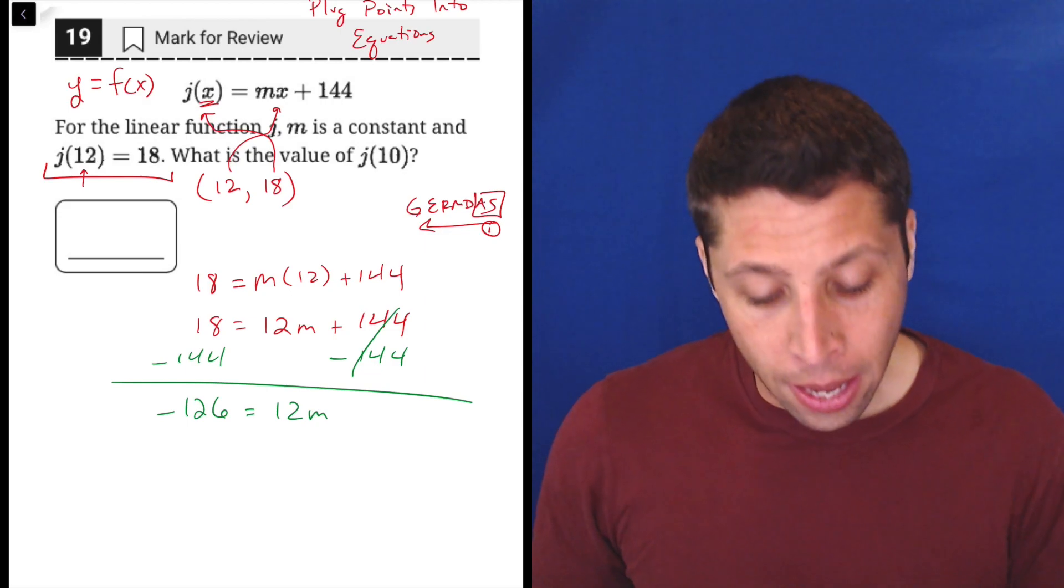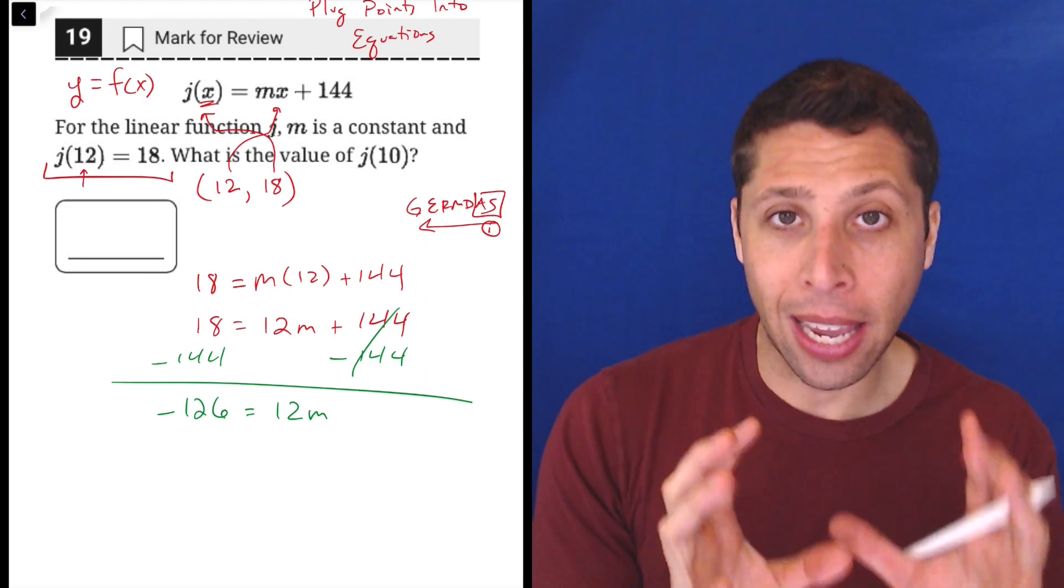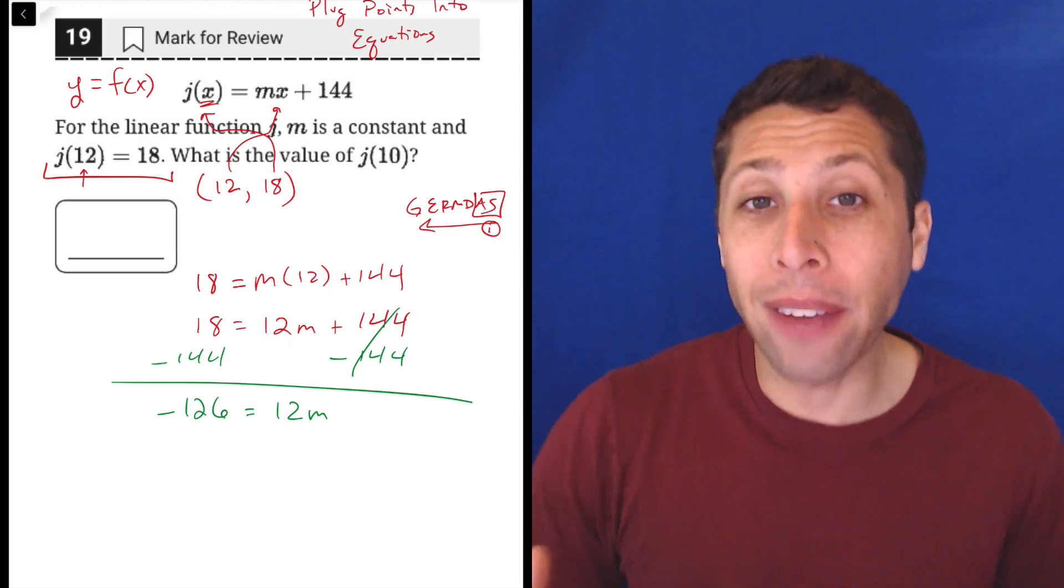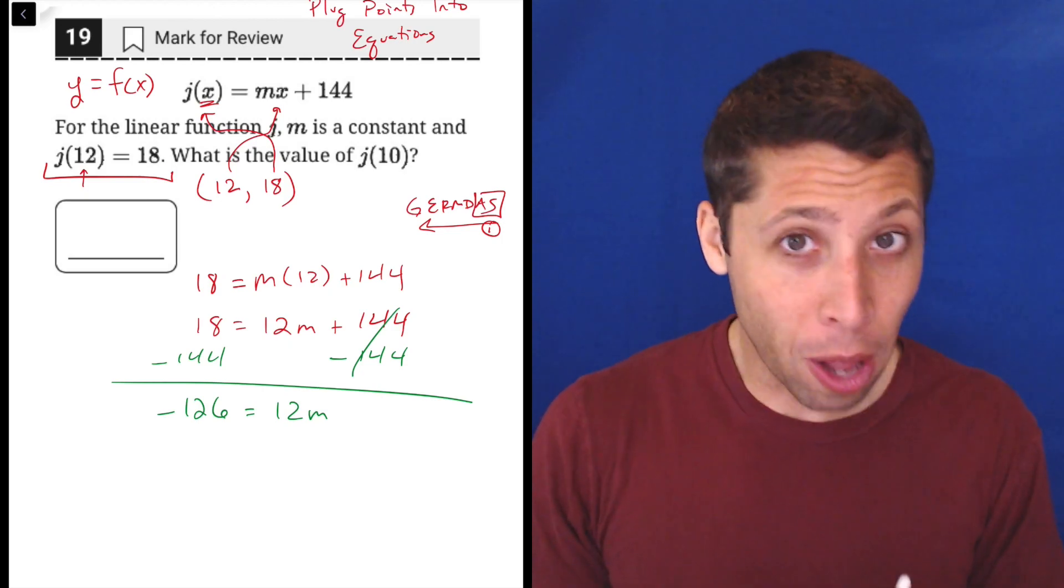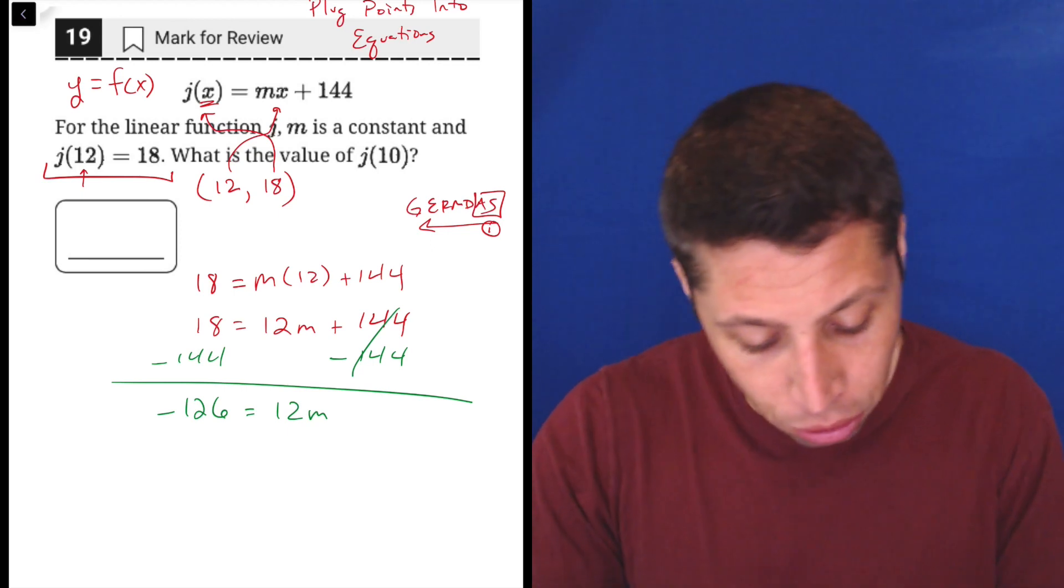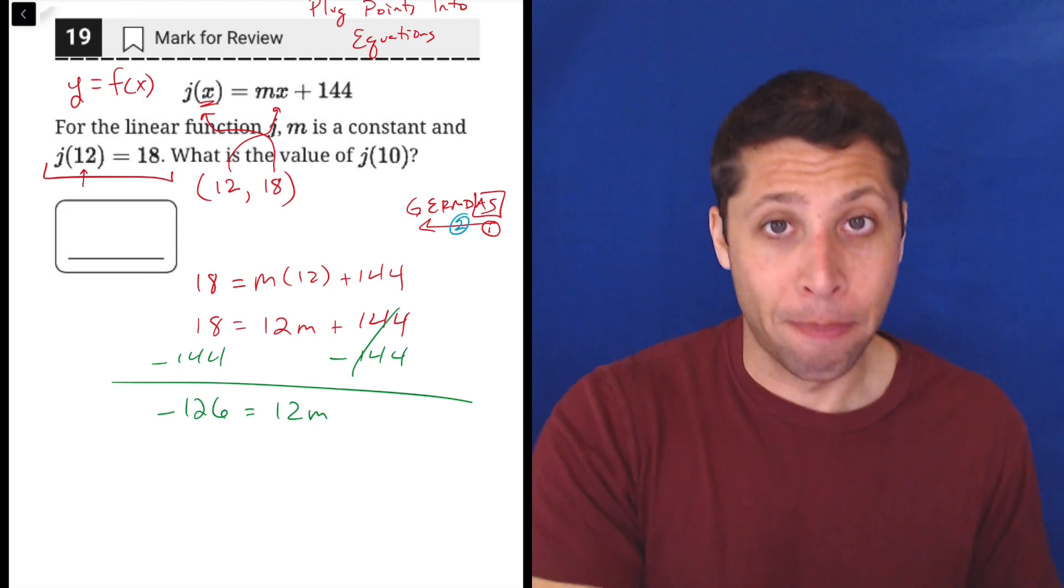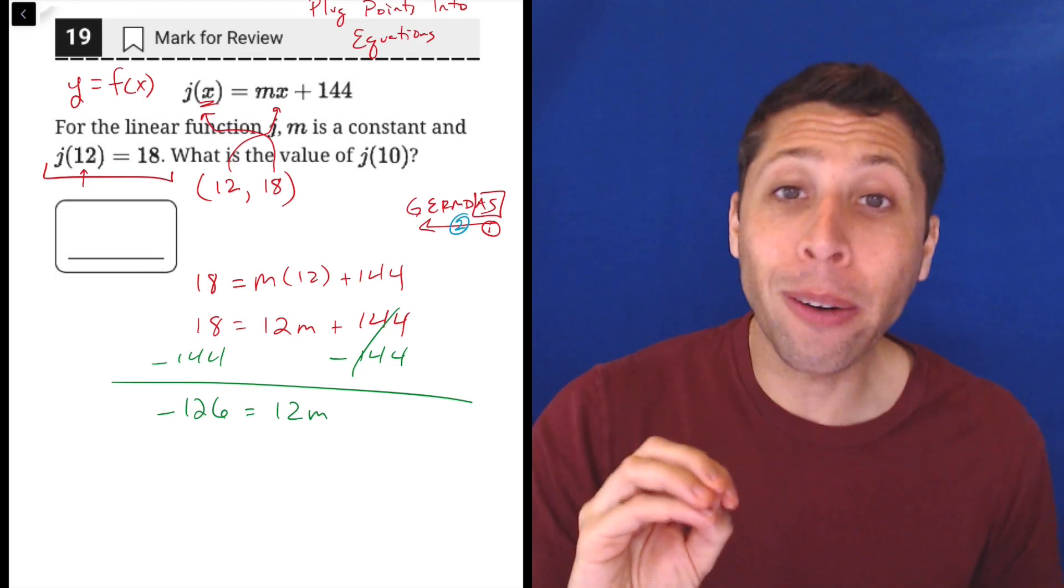I was using my regular calculator for that. Now we've done the addition subtraction, right? Think about that m again. What's getting in the way of us just knowing what m is? Well, there's 12 there now, but 12 is not attached through addition or subtraction. That's attached through multiplication, right? It's 12 times m. So now going backwards through order of operations, we need to get rid of multiplication.